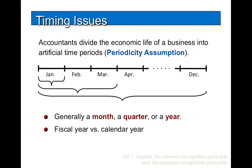Determining the amount of revenues and expenses to report in a given accounting period can be difficult. Two principles are used as guidelines: the revenue recognition principle and the expense recognition principle.